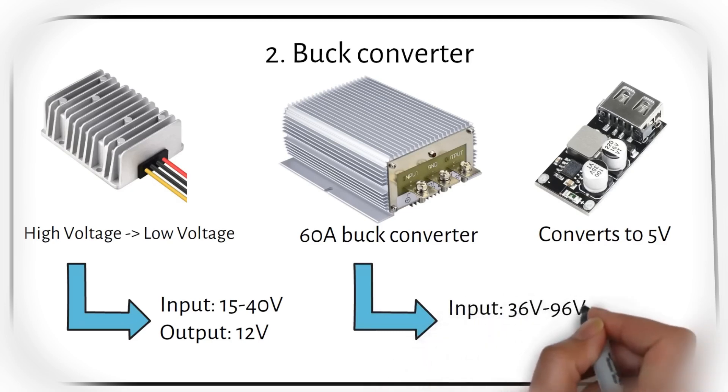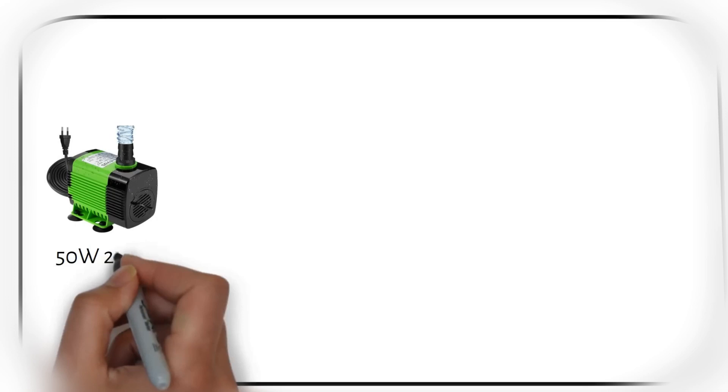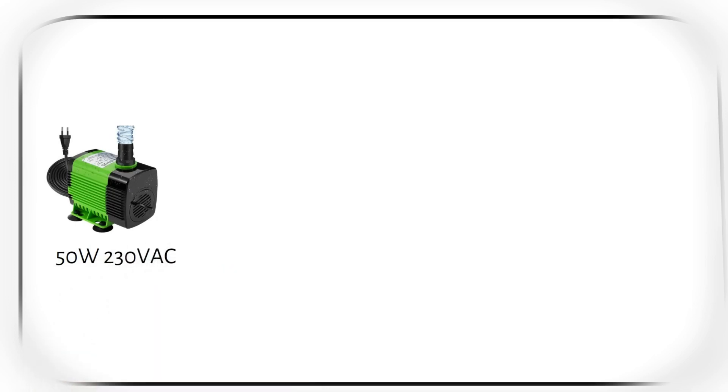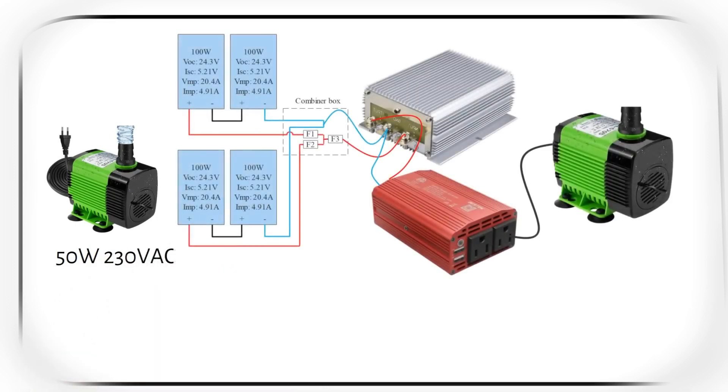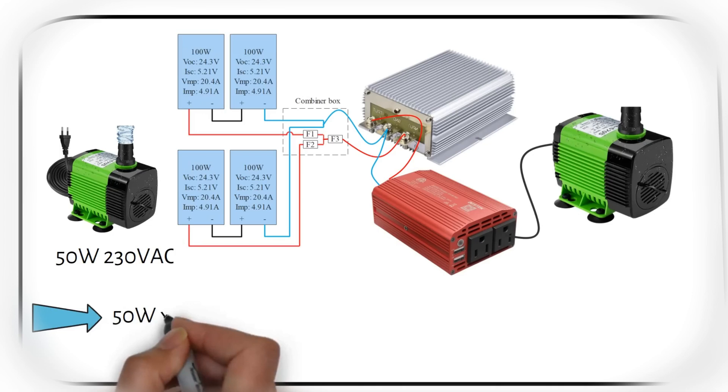Let's explain how we connect these with a practical example. A viewer of the channel wanted to power a 50W AC pump. Let's design such a system with a buck converter and an inverter. The load is 50 watts. Let's say the surge power is 5 times the normal running power, so we need a total of 250 watts. To get this, we need to have 400 watts of solar panels. This might seem a lot, but there are quite some conversion losses.